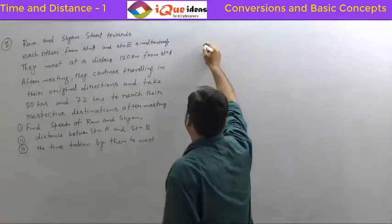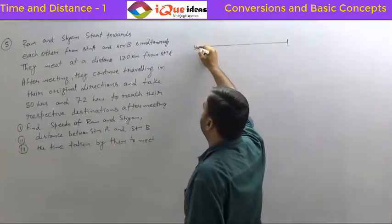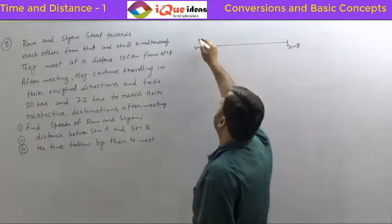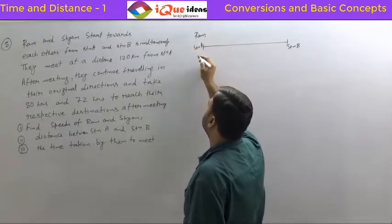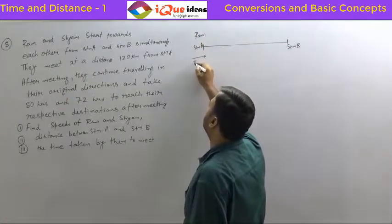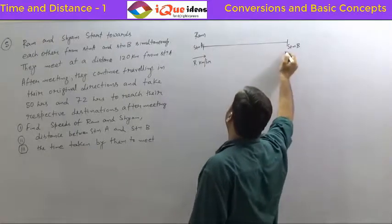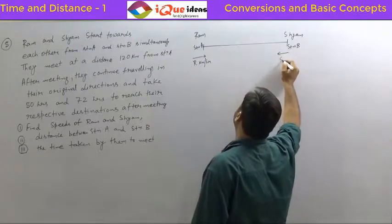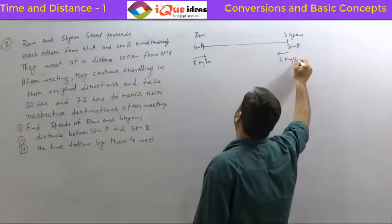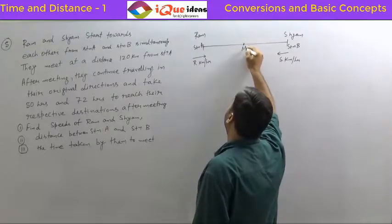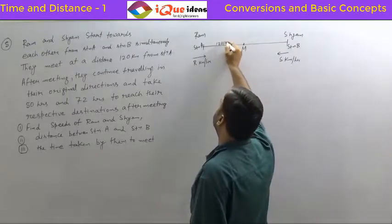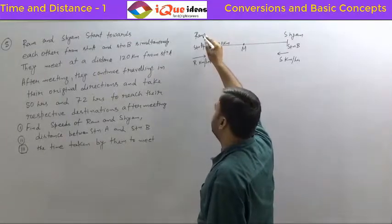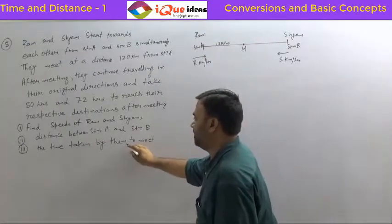Let's draw the situation. This is station A, this is station B. Ram starts from here — let's assume the speed of Ram is r kilometers per hour. Shyam starts from here — let's assume Shyam's speed is s kilometers per hour. Suppose M is the meeting point, so the distance AM is 120 kilometers.